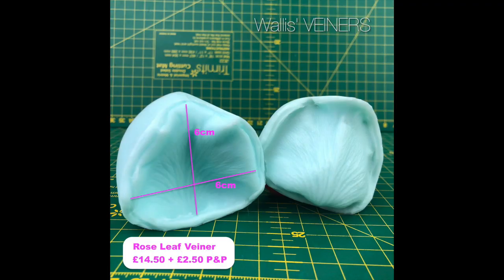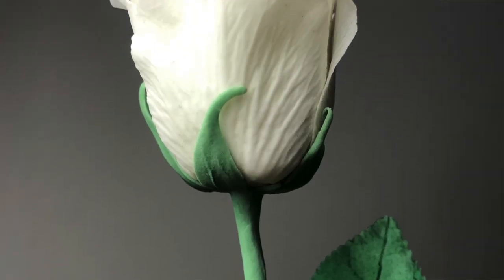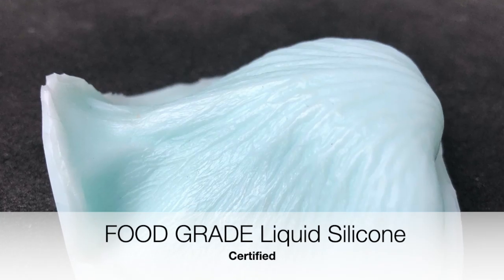But before we get into it, I have an exciting announcement to make, and those of you who've been following me on social media would probably know what it is. Yes, I have decided to start selling veiners. These veiners I've been making for myself and my students over the last few years out of petals and leaves as seasons came. If you want to purchase this rose veiner that is used for creation of this rose, there is a PayPal link below that includes postage and all the rest of it.